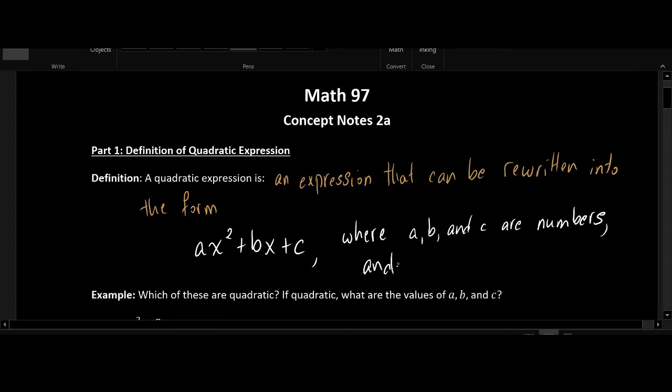There's one more requirement. We need to make sure that this number a, the coefficient of x squared—the number that's being multiplied by x squared—that a is not zero.